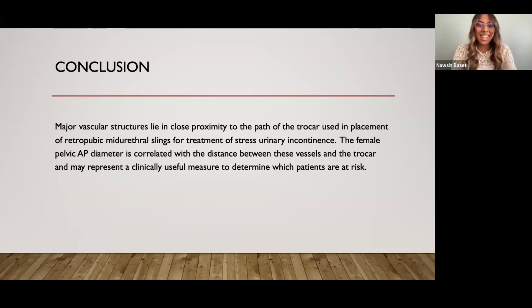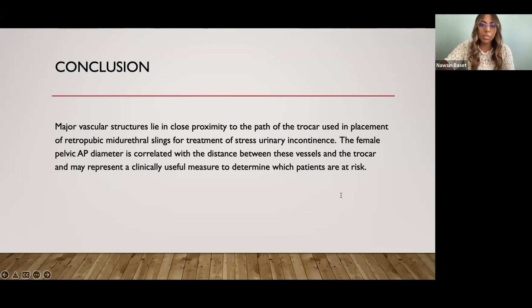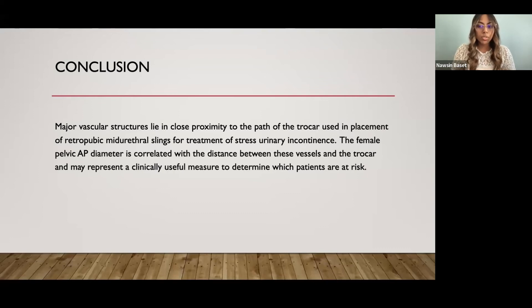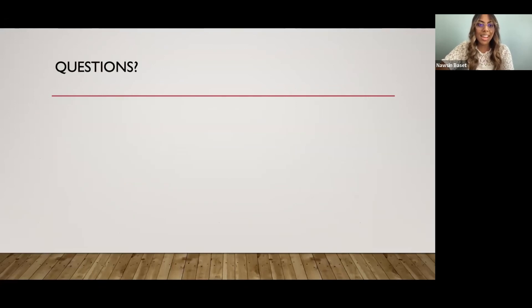To conclude: major vascular structures lie in close proximity to the trocar path used in placement of retropubic midurethral slings for treatment of urinary stress incontinence. The female pelvic AP diameter is correlated with the distance between these vessels and the trocar, and may represent a clinically useful measurement to determine which patients are at risk. We found a novel comparison between artery distances to the trocar path and measurements of the bony pelvis. The AP pelvic diameter alone could provide insight to map the relationship between female pelvic size and vessel distance. We cannot say the same for interspinous distance, where no correlation was found. This relationship could be useful for surgeons to predict which patients may be at risk of vascular injury and retropubic hematoma development.